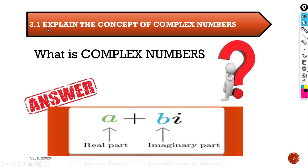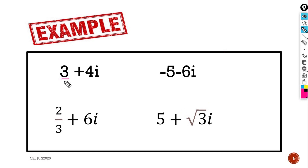3.1: Explain the concept of a complex number. What is a complex number? Basically, a complex number is a combination of a real part and an imaginary part. For example, 3 + 4i: 3 is the real part, and 4i is the imaginary part.